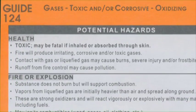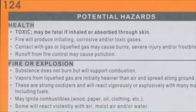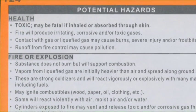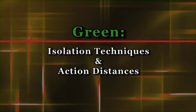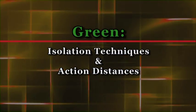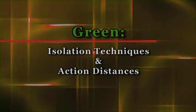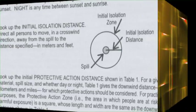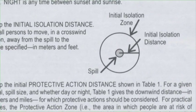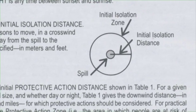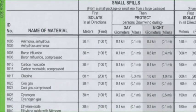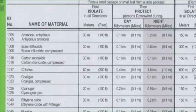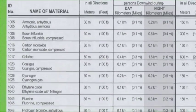The orange section has the emergency response guidelines and action guides for different products. It will list any safety information for a potential hazard and then list the correct response for that hazard. Finally, the green section tells you about the initial isolation techniques and the accurate action distances you need to heed to be safe — simply put, it tells you how far back you need to get when you encounter potentially dangerous circumstances.